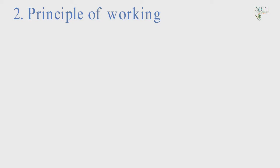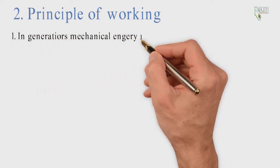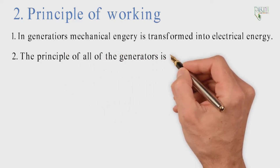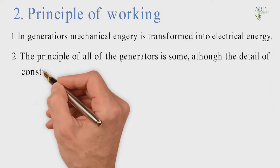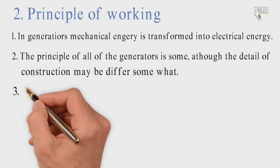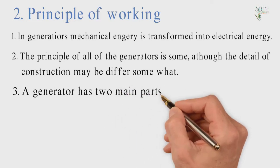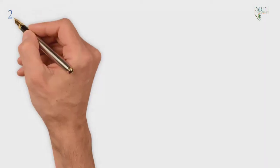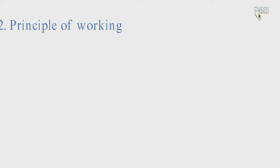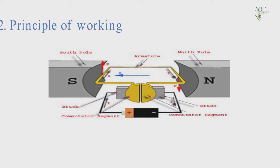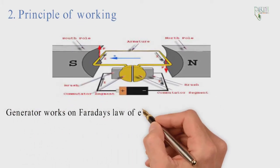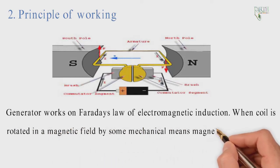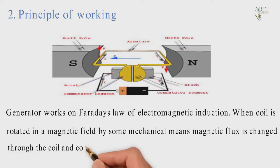Principle of working: In generators, mechanical energy is transformed into electrical energy. A generator works on Faraday's law of electromagnetic induction. When a coil is rotated in a magnetic field by some mechanical means, magnetic flux is changed through the coil, and consequently an EMF is induced in the coil.